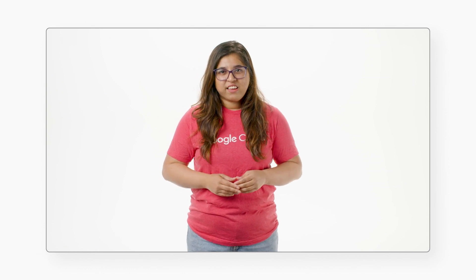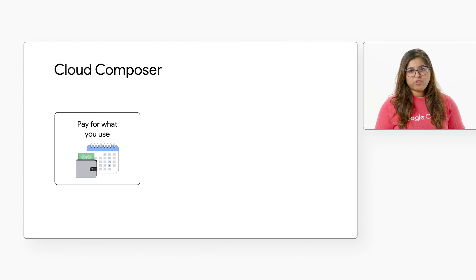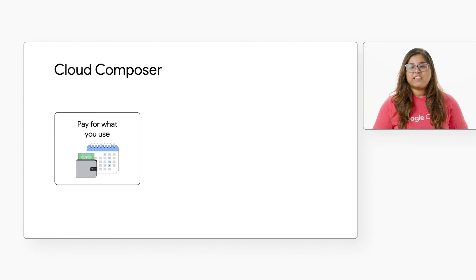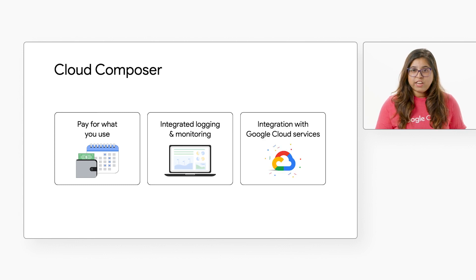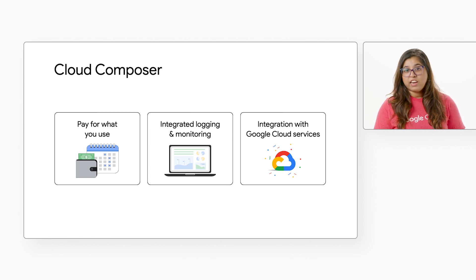Airflow is already widely used among the data engineering community, but running it on Google Cloud using Composer gives you a few more advantages. Unlike the licensing model, you pay for what you use, and with the latest version, you can scale your workloads up and down as needed, giving you more bang for your buck. With integrated logging and monitoring, troubleshooting is much simpler and efficient. With end-to-end integration with other Google Cloud services, you can modernize or migrate underlying data workloads from on-premise or cloud and build your solution fully on a serverless data cloud.